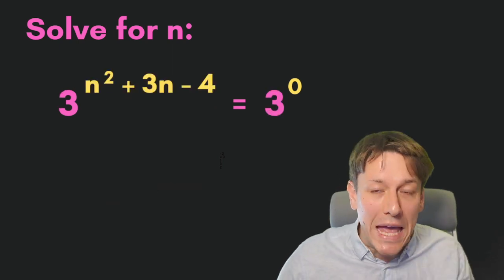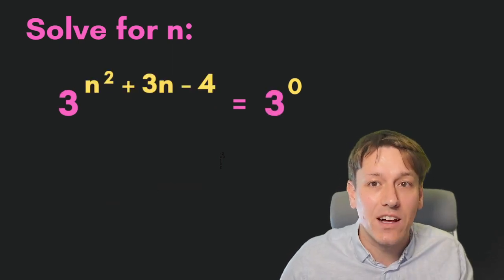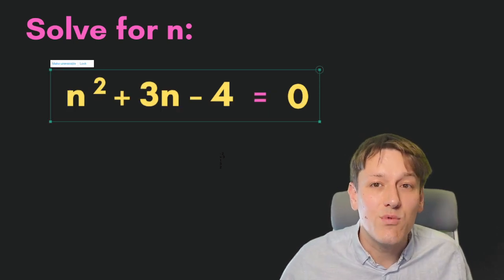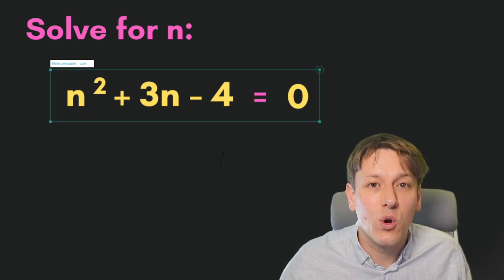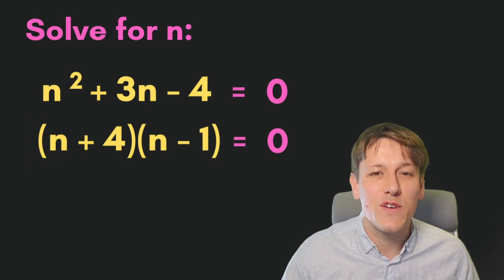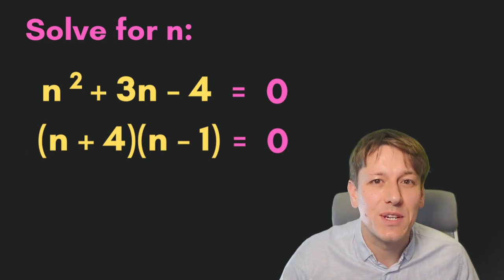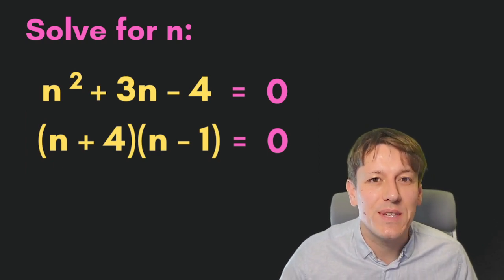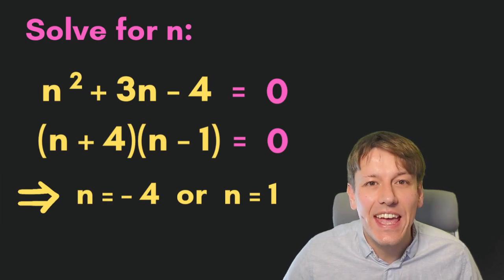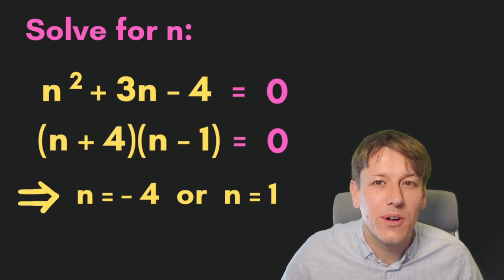Now I have 3 to the power of something equals 3 to the power of something else, and the only way for that to be true is for those two things to be equal. So we can get rid of the base 3 now, and this whole question boils down to solving the quadratic equation n squared plus 3n minus 4 equals 0. Factorising as (n + 4)(n - 1) gives us the final answer: n is either minus 4 or plus 1.